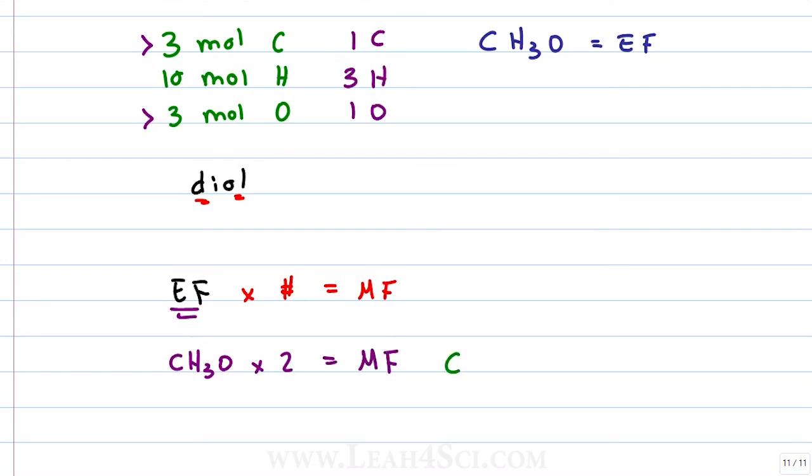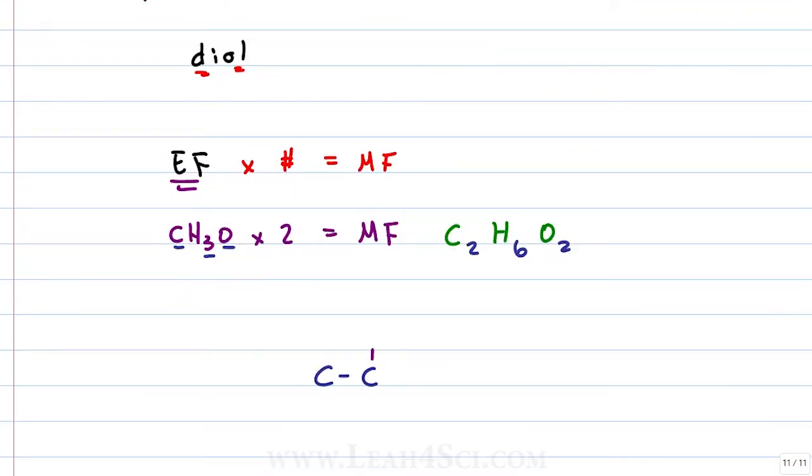What do we have? 2 times 1 carbon is 2. 2 times 3 hydrogen is 6. 2 times 1 oxygen is 2. Giving me a molecular formula of C2H6O2. And if you remember your protecting groups from organic chemistry, you might recognize this as ethylene glycol which is used to protect carbonyl groups in the advanced reactions.